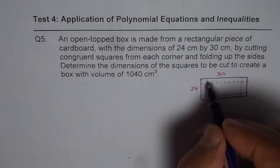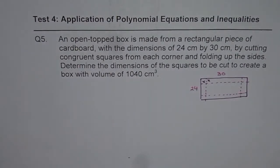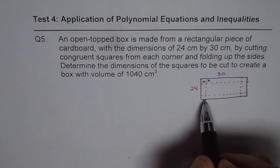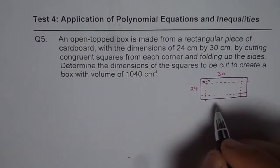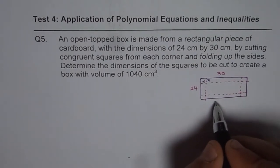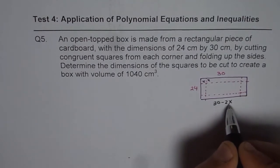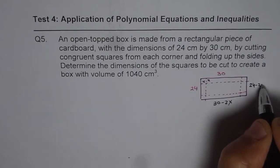Now, let us say these dimensions are x. Now, when you cut squares of x unit, x by x from each corner, the dimensions of the box will be, the base will be 30 minus 2x.